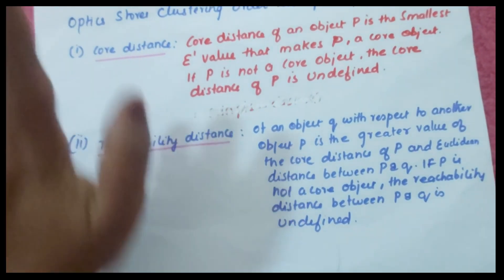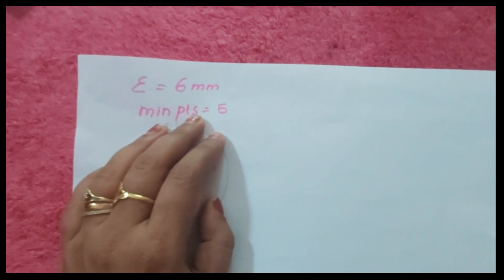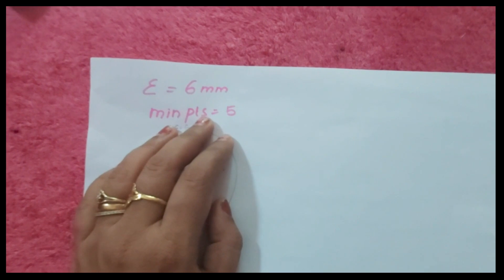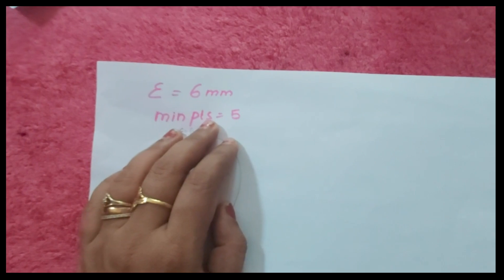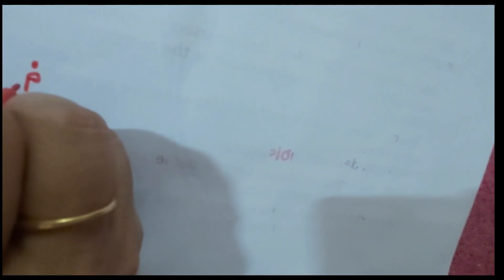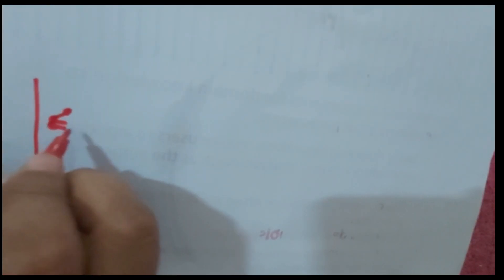To explain this with a diagram: we have a cluster with radius epsilon equal to 6 millimeters and minimum points equal to 5. Let there be a point p, and we draw a circle of epsilon 6 millimeters around it.